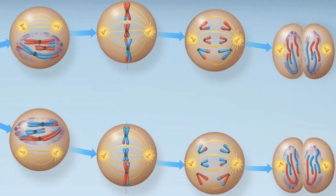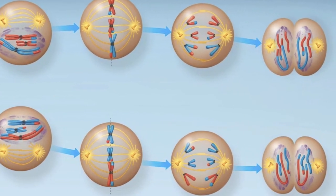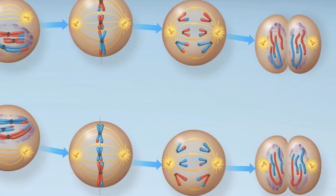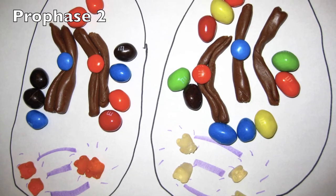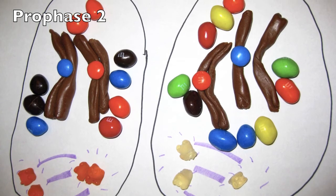Two daughter cells will now undergo meiosis II to complete the second half of meiosis in order to separate sister chromatids. In prophase II, the spindle apparatus again forms, and the chromosomes move toward the metaphase plate.